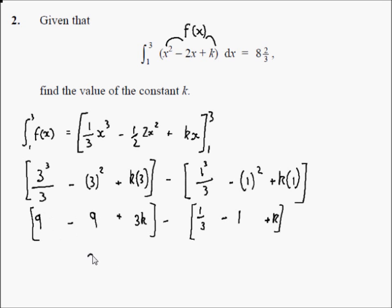Now 9 minus 9 is 0, so that side is just 3k. 3k minus a third minus 1, minus 2 thirds plus k, so 3k minus minus 2 thirds plus k equal to 8 and 2 thirds.